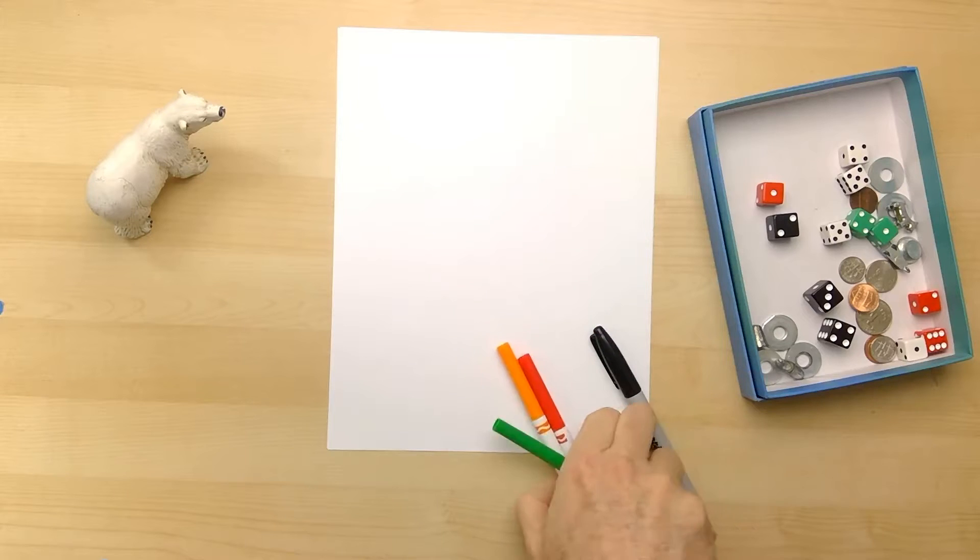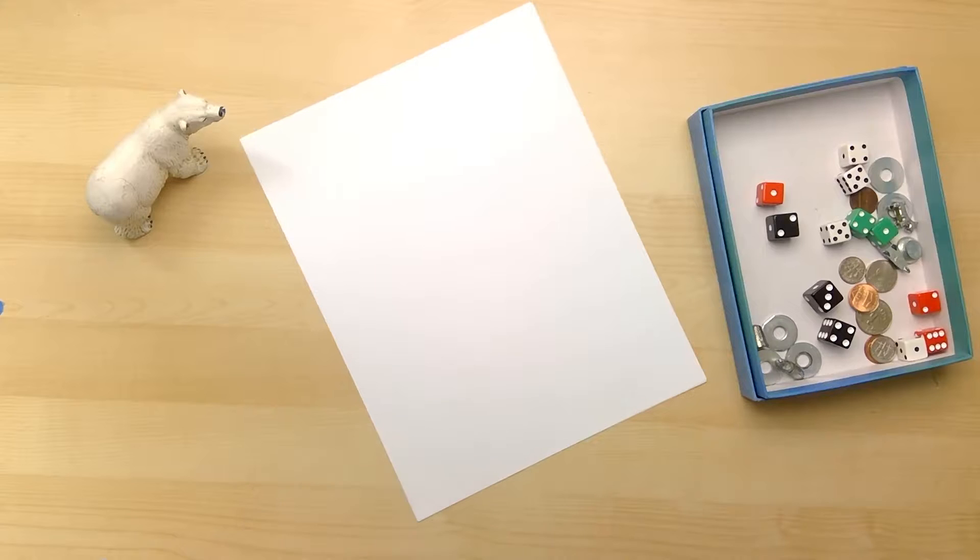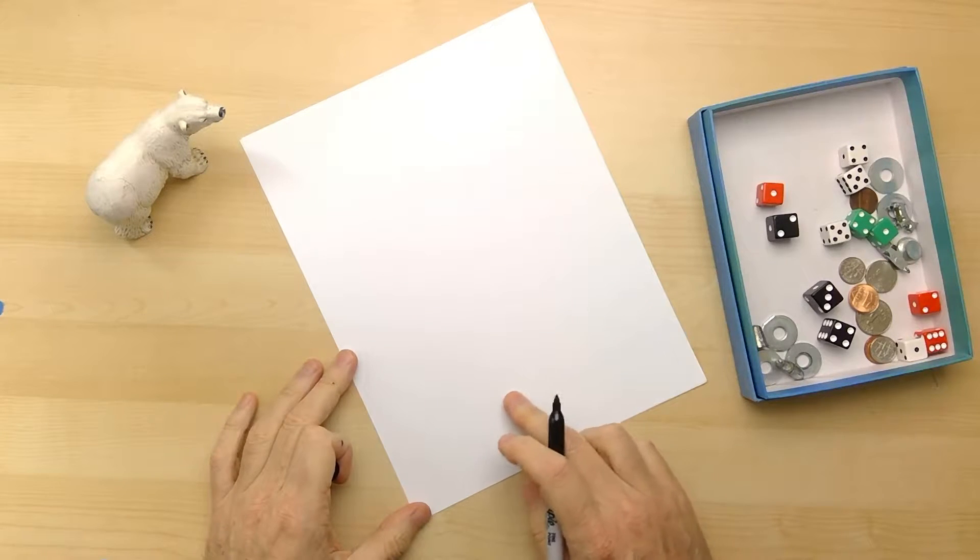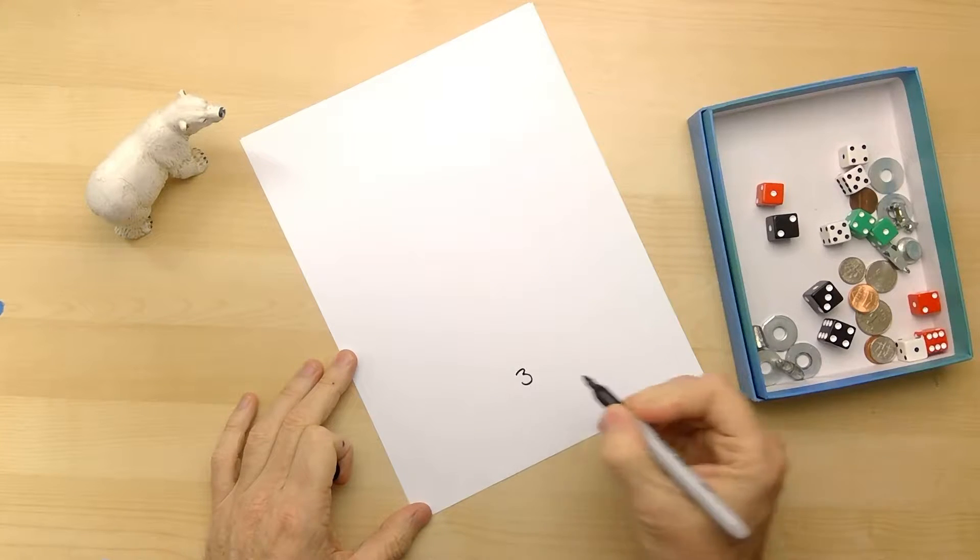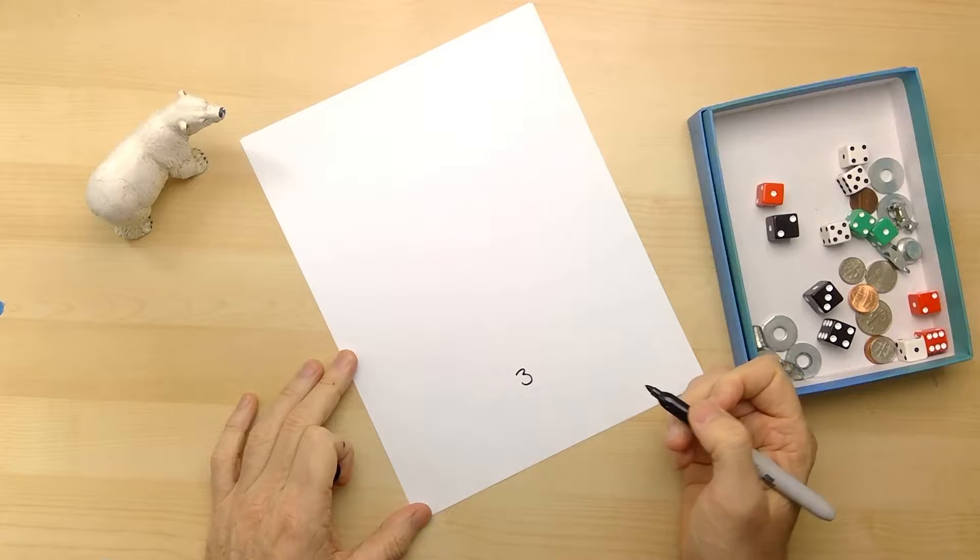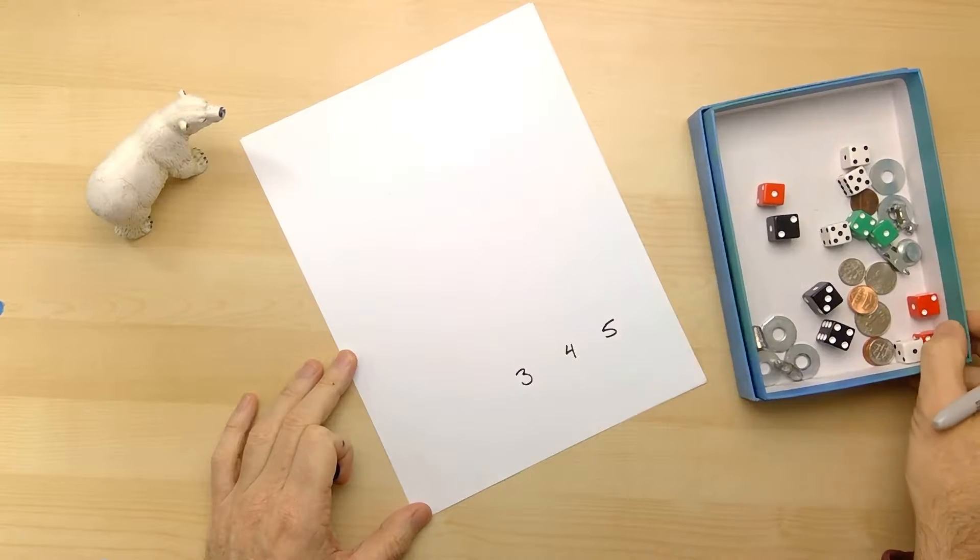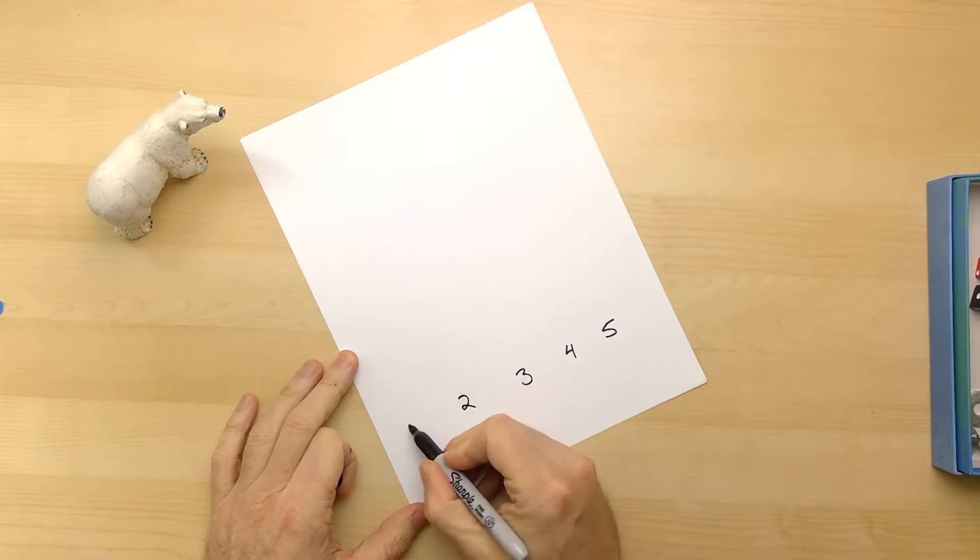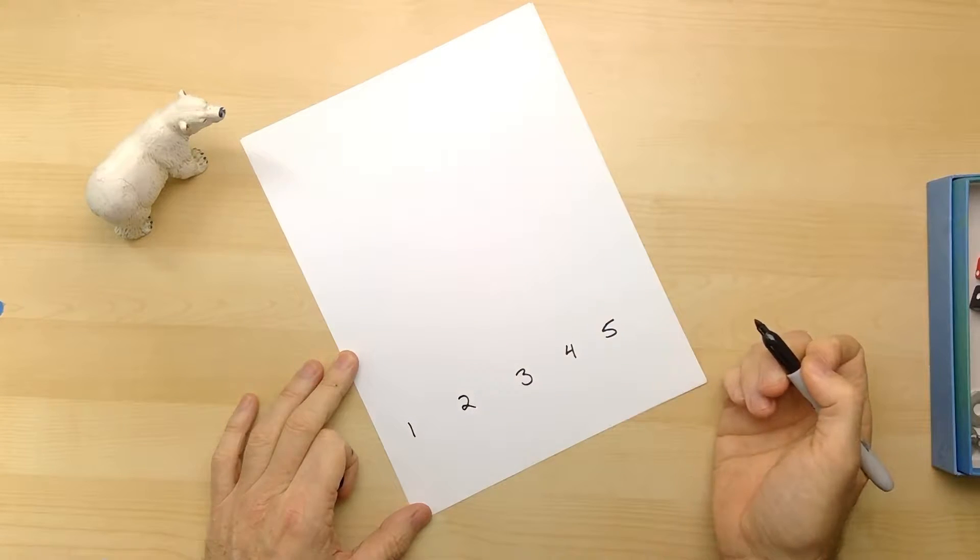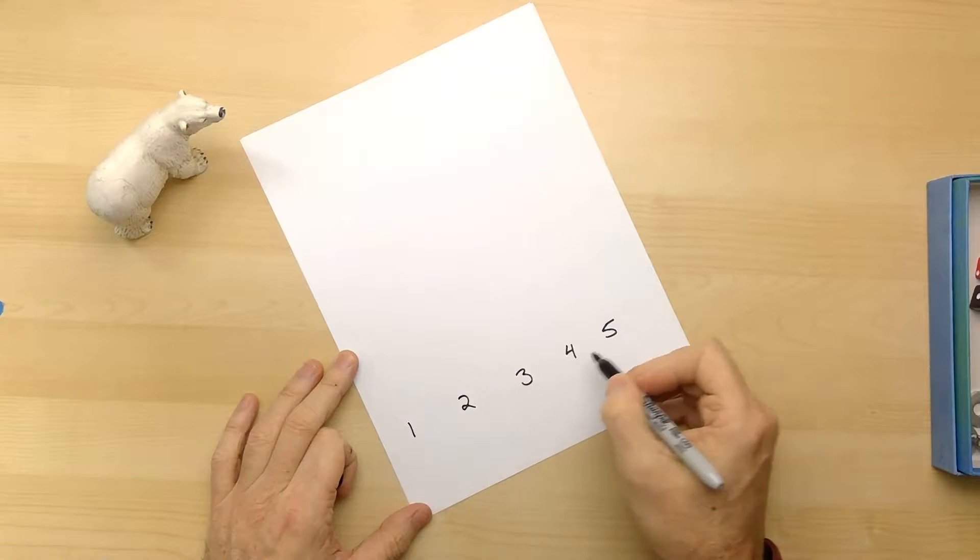What we need to do first is put some numbers on our paper. So let's take our pen or pencil and near the bottom down here let's write the number three, and let's go ahead and put four and five. That's a good start for now. And put a two and a one over here. So far so good. Let's count up though - one, two, three, four, five.